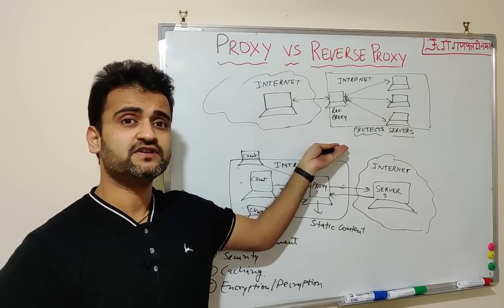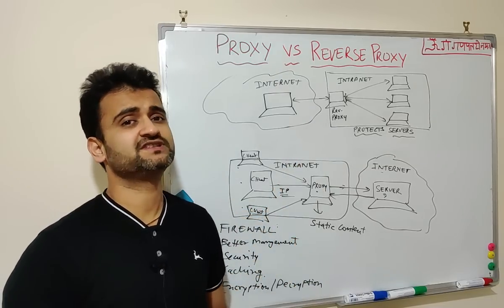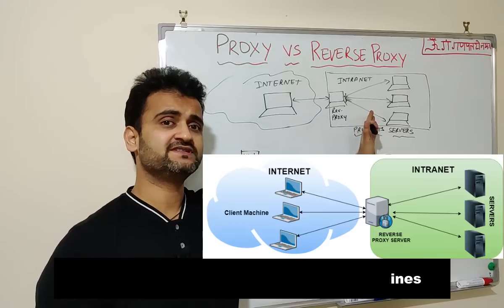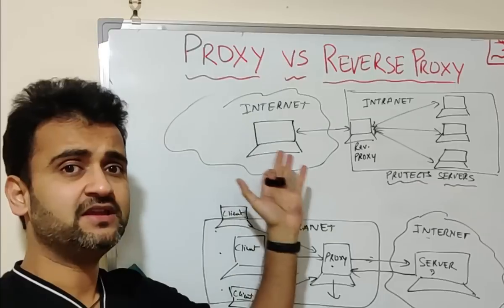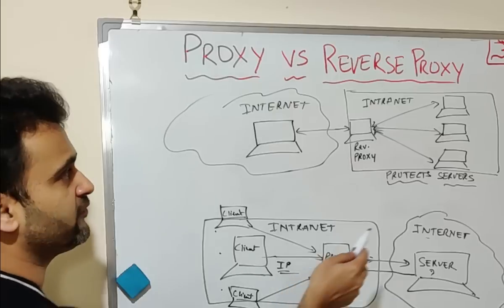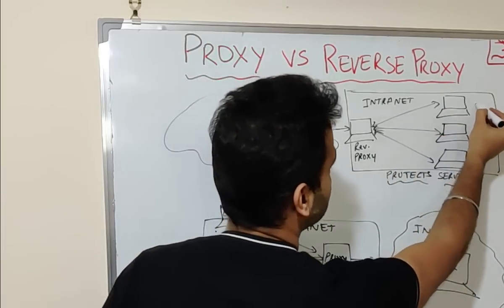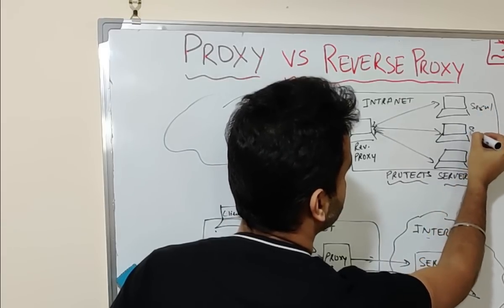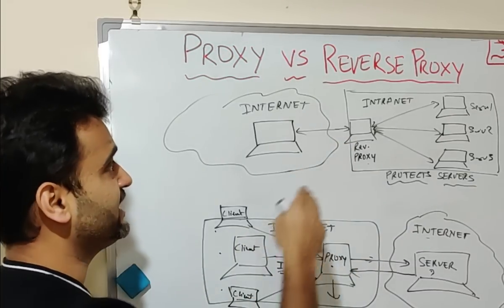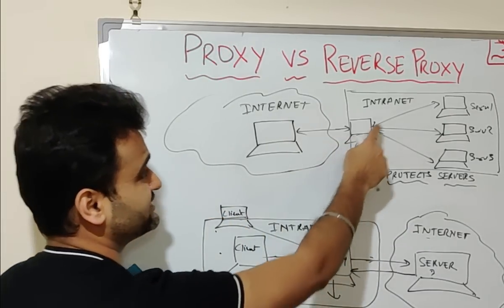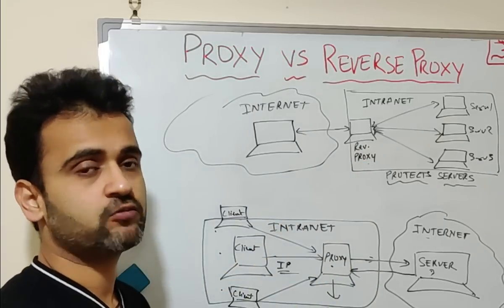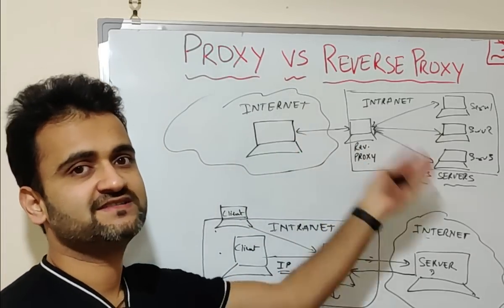A reverse proxy server does exactly the opposite of what a proxy server does. Instead of protecting the client, it protects the server. This reverse proxy server comes in handy whenever there is any request coming from the internet wanting to access any of your servers within the network. Instead of exposing your servers — server 1, server 2, server 3 — you put a reverse proxy in front of them, and any request to access your websites or servers has to go via the reverse proxy, which then decides how to filter that request and send it forward.